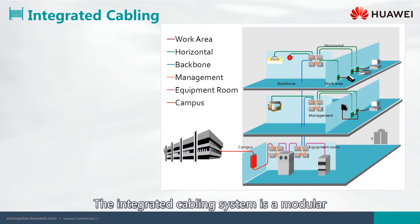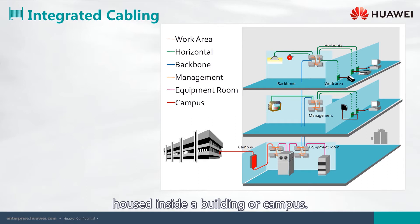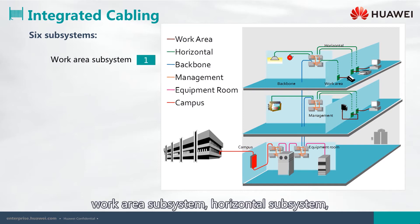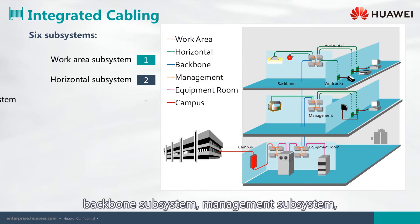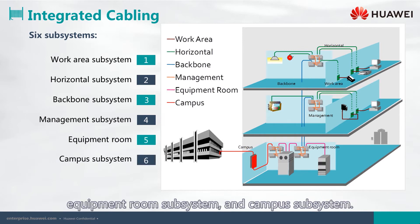The integrated cabling system is a modular and highly flexible information transmission system housed inside a building or campus. The entire system is composed of six subsystems: work area subsystem, horizontal subsystem, backbone subsystem, management subsystem, equipment room subsystem, and campus subsystem.